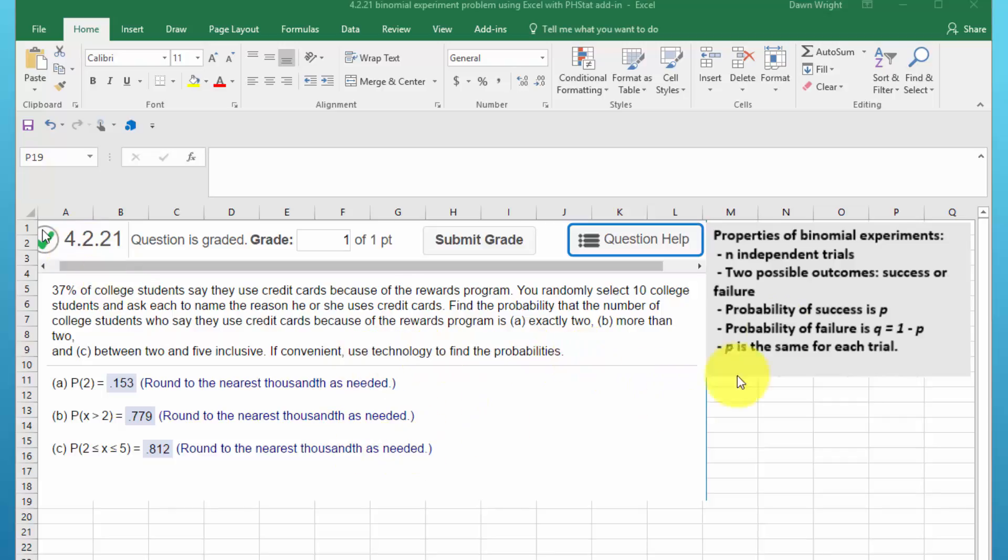So let's look at this. The properties of a binomial experiment: there's independent trials, and here we've got 10 randomly selected students so those are independent. We've got two possible outcomes, success or failure. In this case, they either say they do or do not use credit cards because of the reward program.